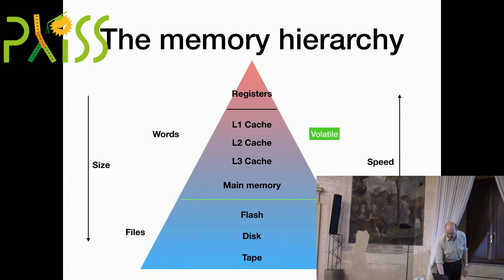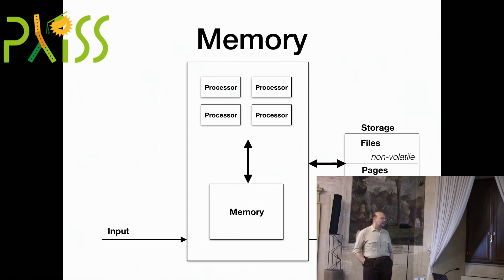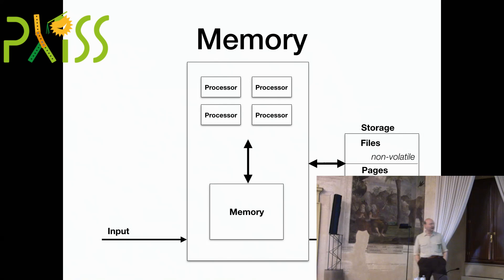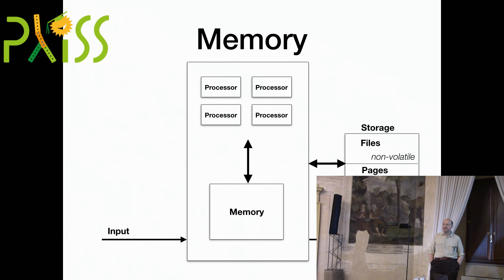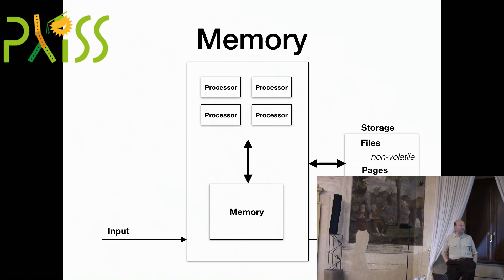We also do two different kinds of things with storage — the stuff below the line. We have files that store all the non-volatile stuff, but we also use it as a volatile extension to memory by paging. Our RAMs are big enough every once in a while that we might want just a little bit more, and rather than forcing people to buy more RAM, we allow them to swap stuff out to disk — but we treat that stuff as volatile. Even though it's in a non-volatile medium, we wipe it when the machine gets rebooted.